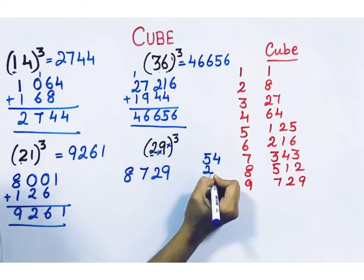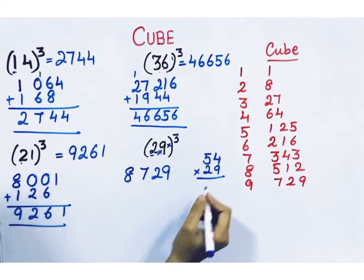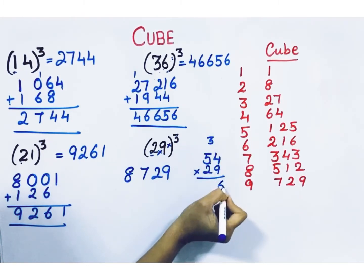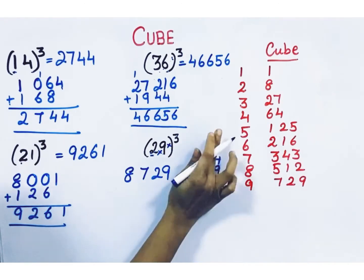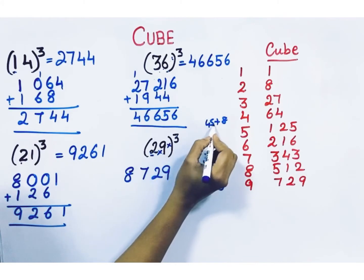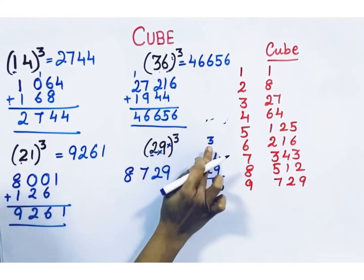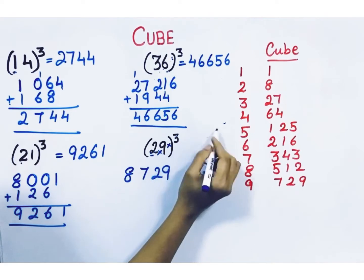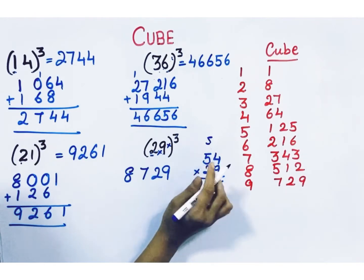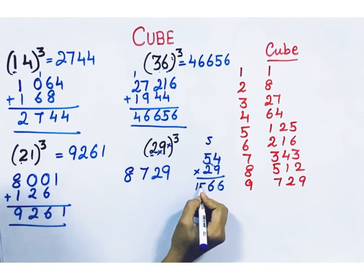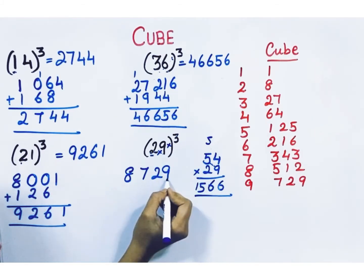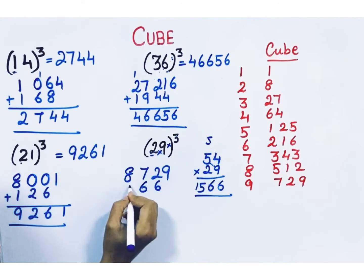Take 54 and multiply by 29. 4 times 9 is 36, carry 3. Then 5 times 9 is 45 plus 4 times 2 is 8, giving 53 plus carry 3 is 56 — write 6 here and carry 5. Next, 5 times 2 is 10 plus 5 carry is 15. So the multiplication answer is 1566. Leave one place and write: 6, 6, 5, 1.